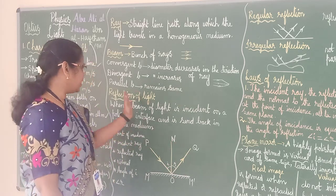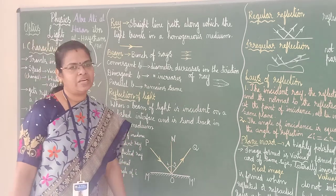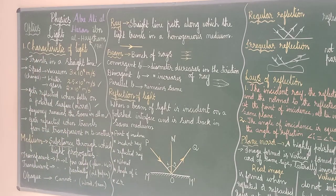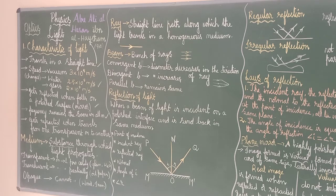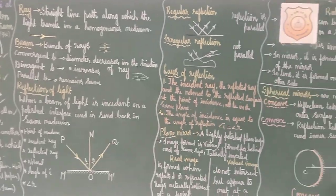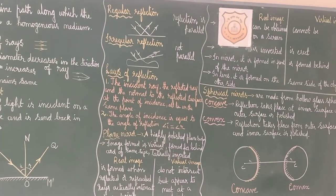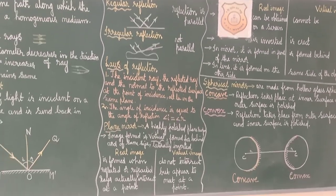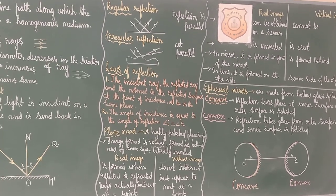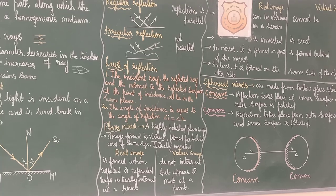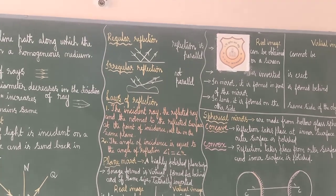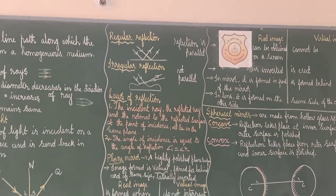We also know that there is regular reflection and irregular reflection. If the reflection takes place in a regular manner, it is called regular reflection. If the reflection is irregular, then it is called irregular reflection.